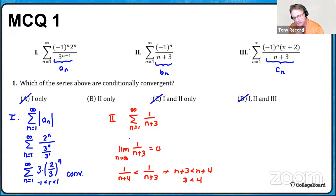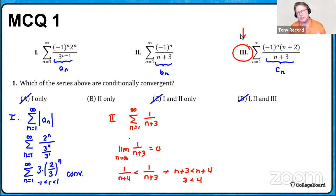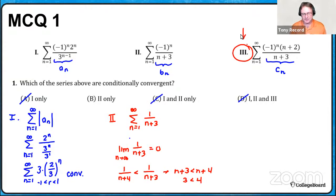For Series III, I'd love for you to investigate it yourself — use the nth term test. It's one of the earlier, simpler tests to apply, but it becomes really valuable here to show that Roman numeral III is not conditionally convergent. So the answer is II only.